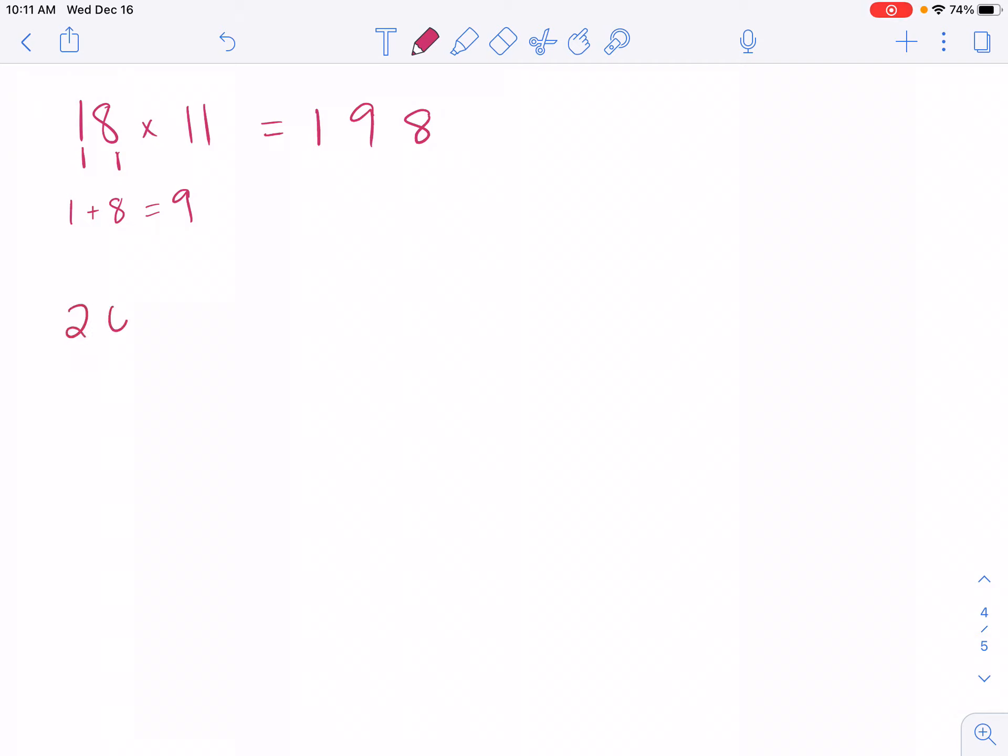Let's try it with another one. 26 times 11. Break it up into the two different digits, 2 and 6. Then add them together. 2 plus 6 is 8. My 8 goes in the middle, 286.